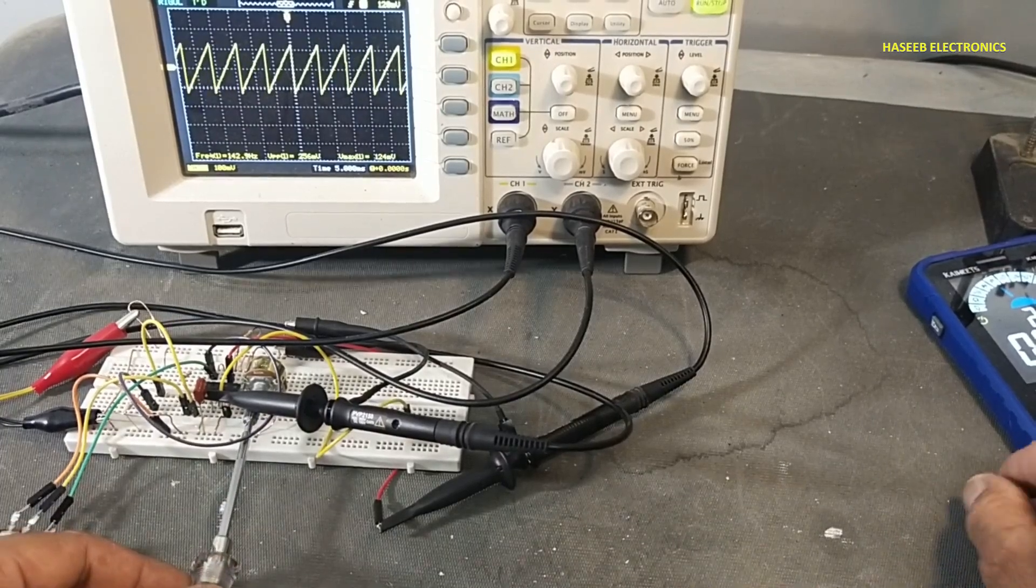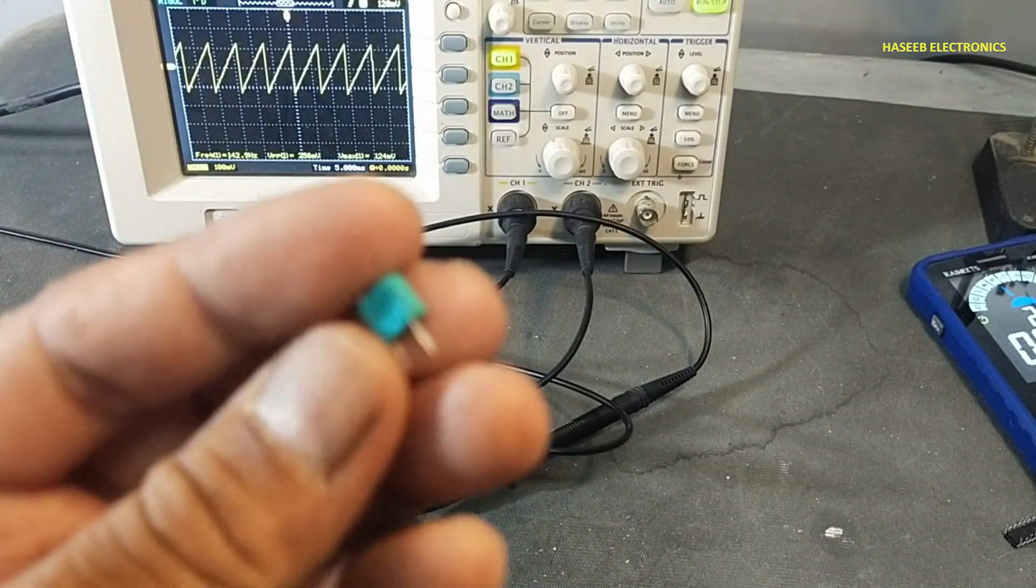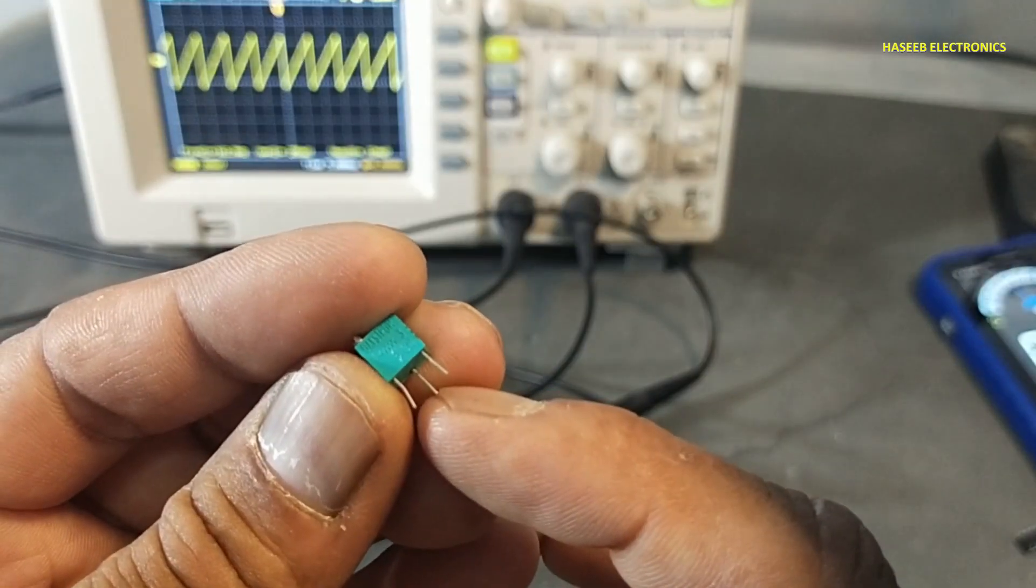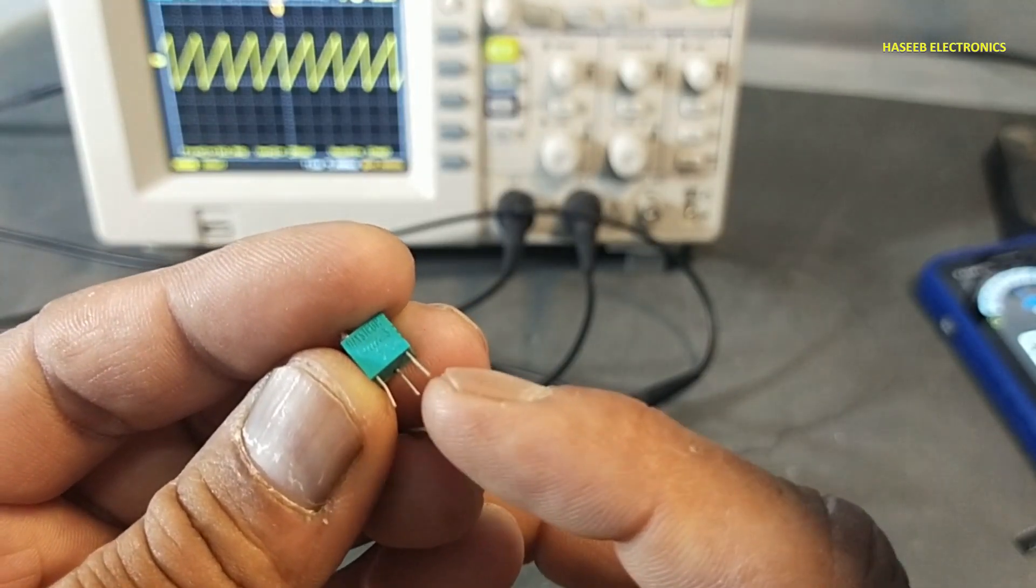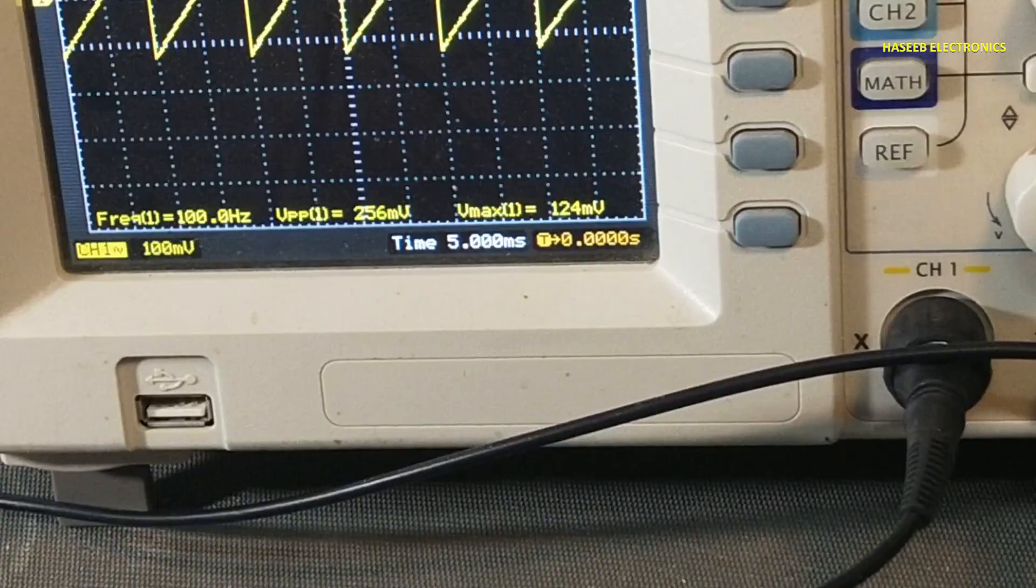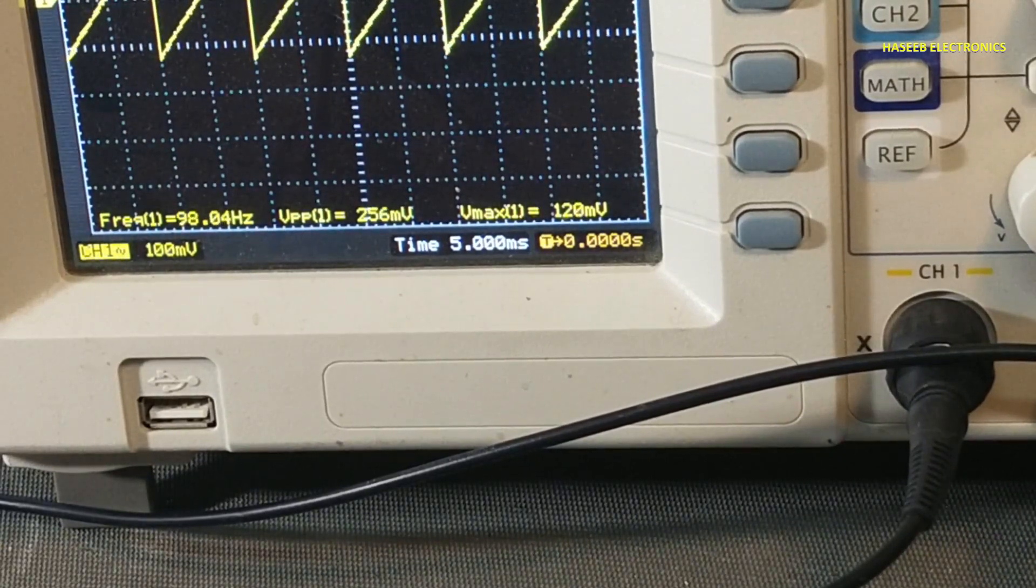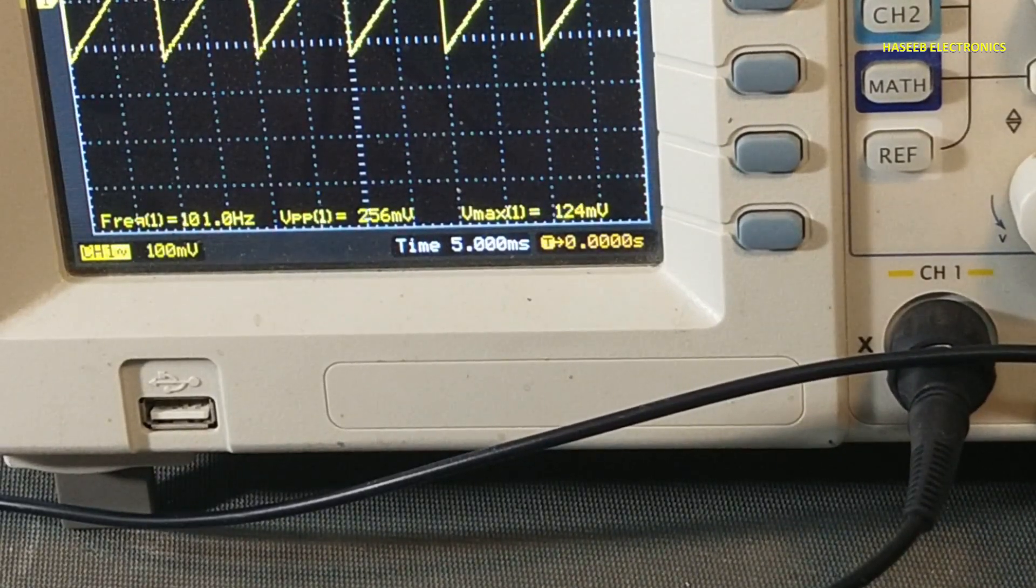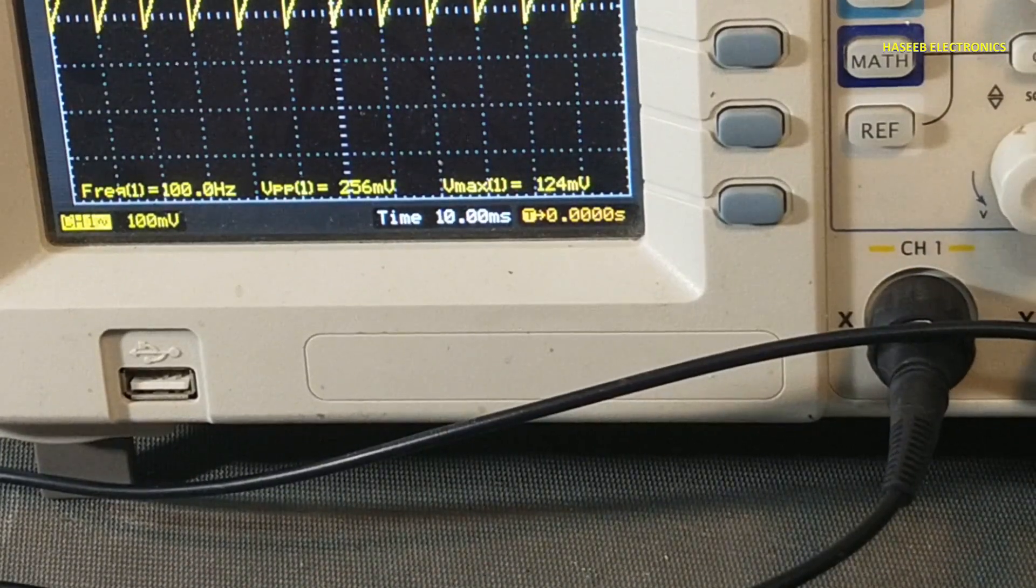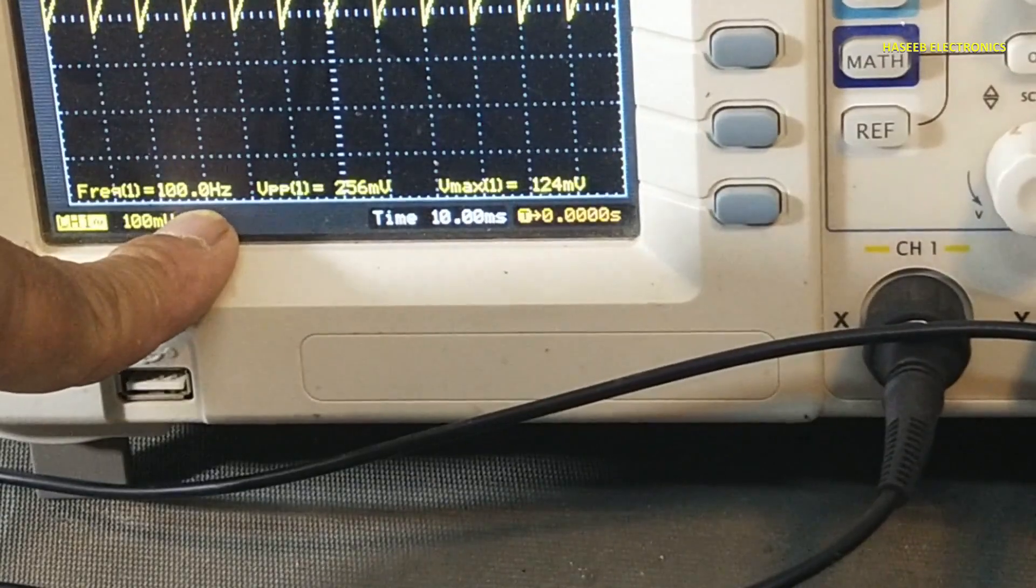Using this trim pot, we can connect one end to the resistor in series with resistor, the second end we can connect to ground. Here we can adjust our required frequency. So it is now 100 hertz.